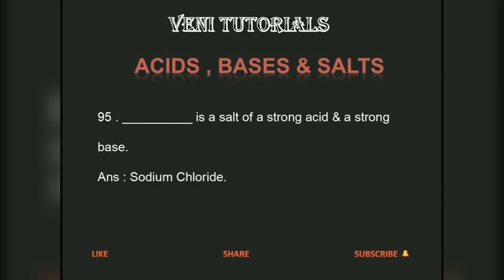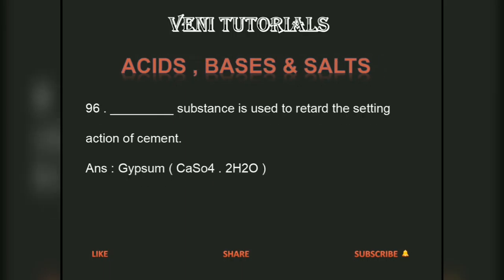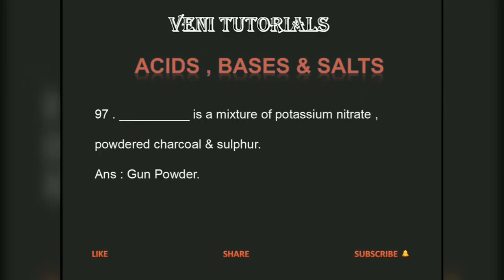Sodium chloride is a salt of a strong acid and a strong base. Gypsum (chemical formula CaSO4·2H2O) is the substance used to retard the setting action of cement. A mixture of potassium nitrate, powdered charcoal, and sulfur is called gunpowder.